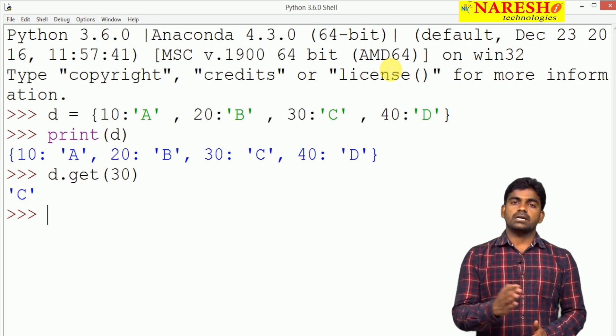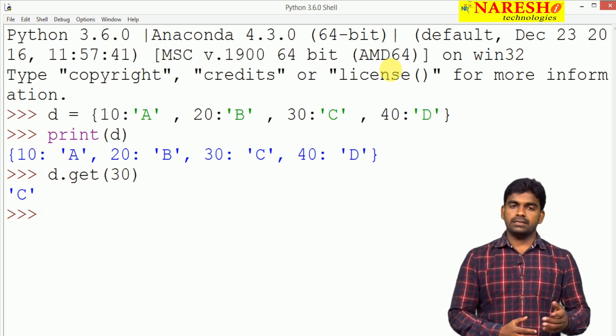It is returning that value which is associated with that key, that is C it is giving.